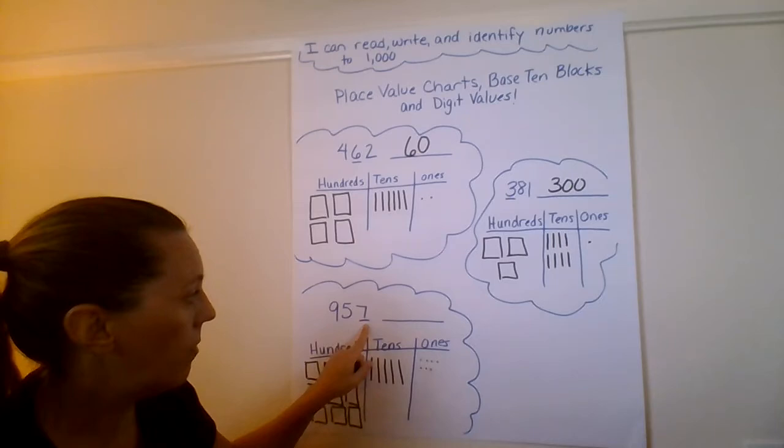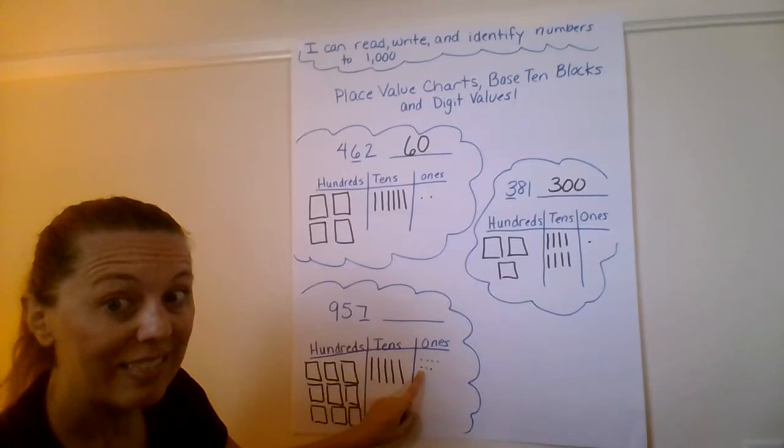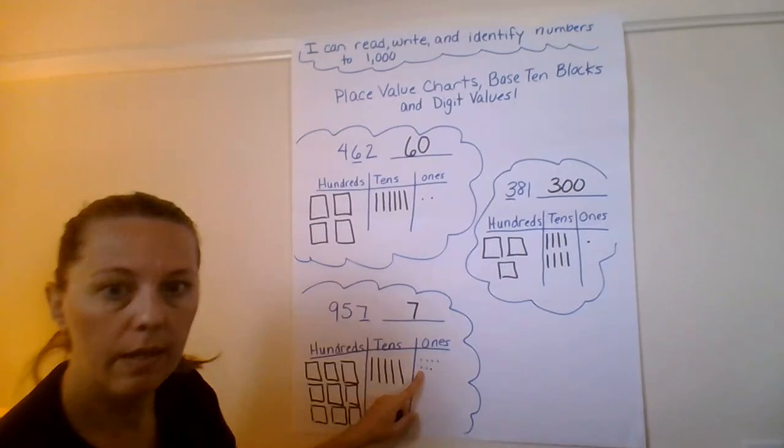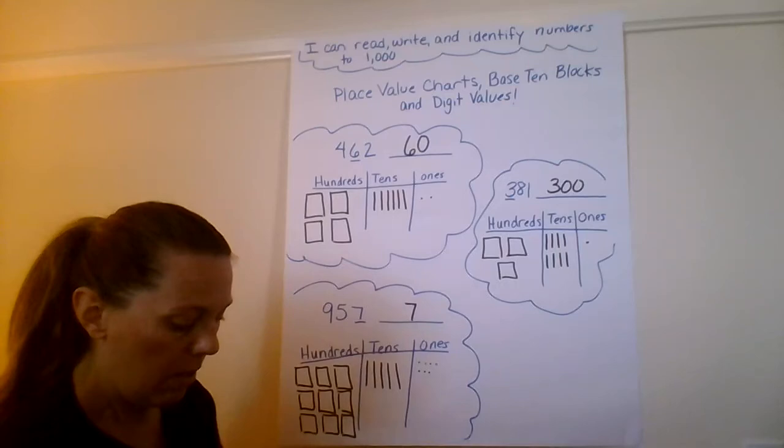The digit underlined in this number is the ones place digit. So I'm gonna go to my ones place and I count my ones by ones. I have seven of them. Seven is the value of that digit. It's worth seven.